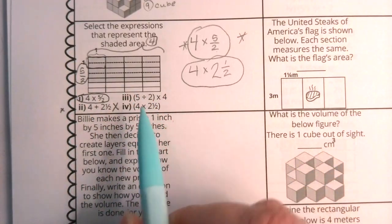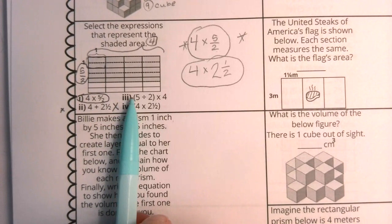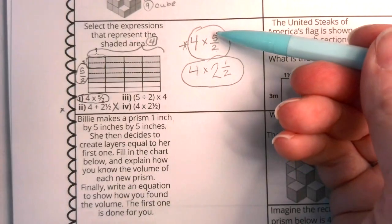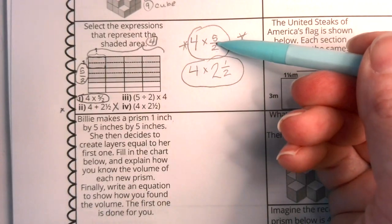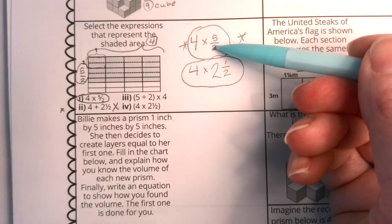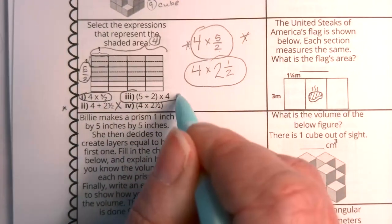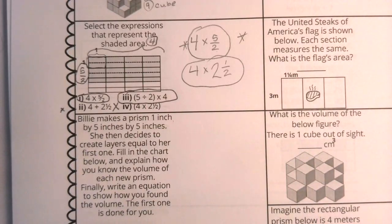Now taking a look at number three, do I see five divided by two? Do I see five over two? I sure do. Five over two. Five divided by two is right here. So I see five divided by two times four. Yes. So number three is correct. We are going to circle.